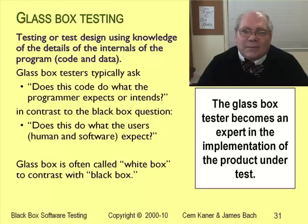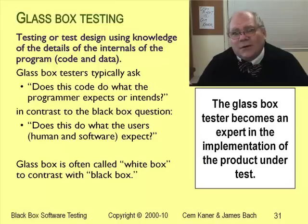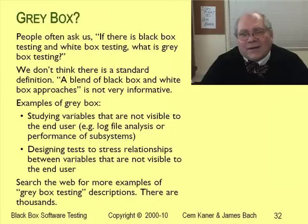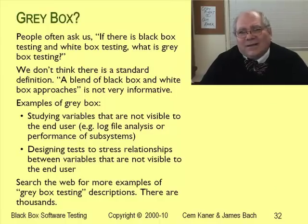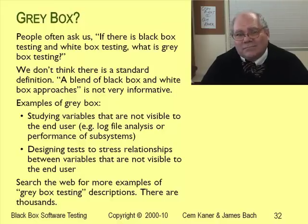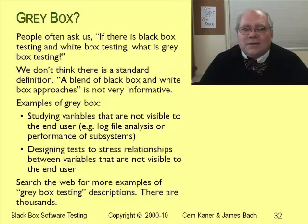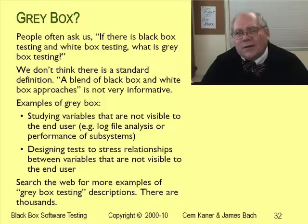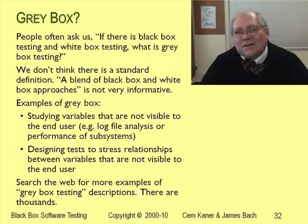The contrast with black box testing is glass box testing — we can see into the box, so we design our tests based on the characteristics of the code. Many people call glass box testing white box instead. Then there's gray box testing, or if you prefer, translucent box testing. The basic idea is that there are tests that aren't exactly black box and aren't exactly glass box, so we call them gray. For example, maybe you're going to study the values of variables that aren't visible to the end user but you can see them using tools. The term itself is so broad that I'm not sure it's useful, but it shows up in a lot of blogs so you should have some familiarity with it.